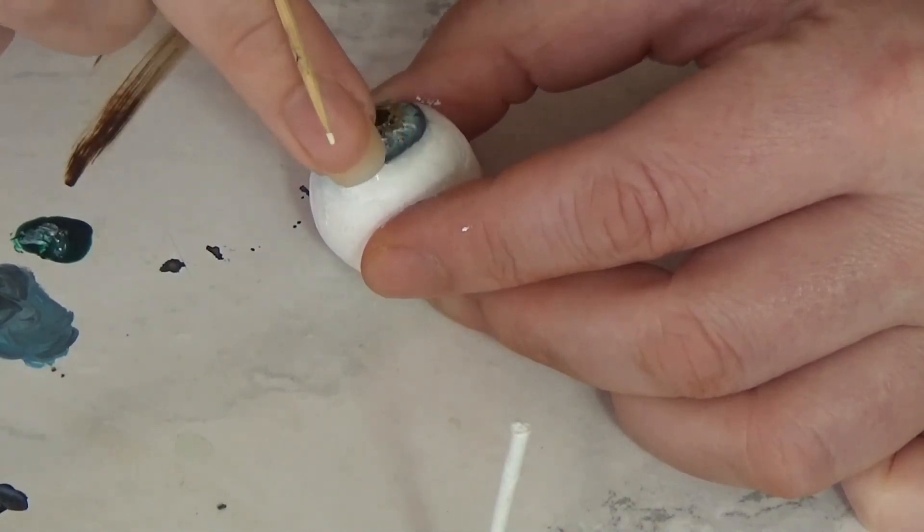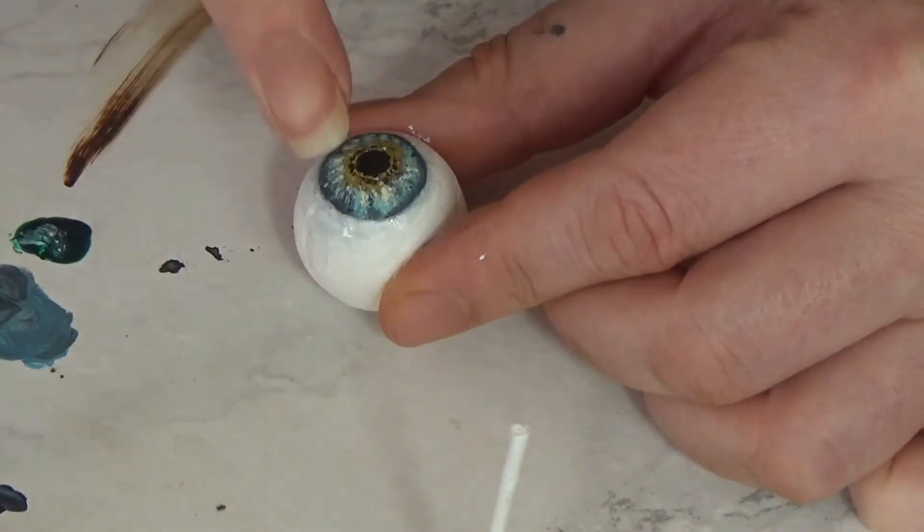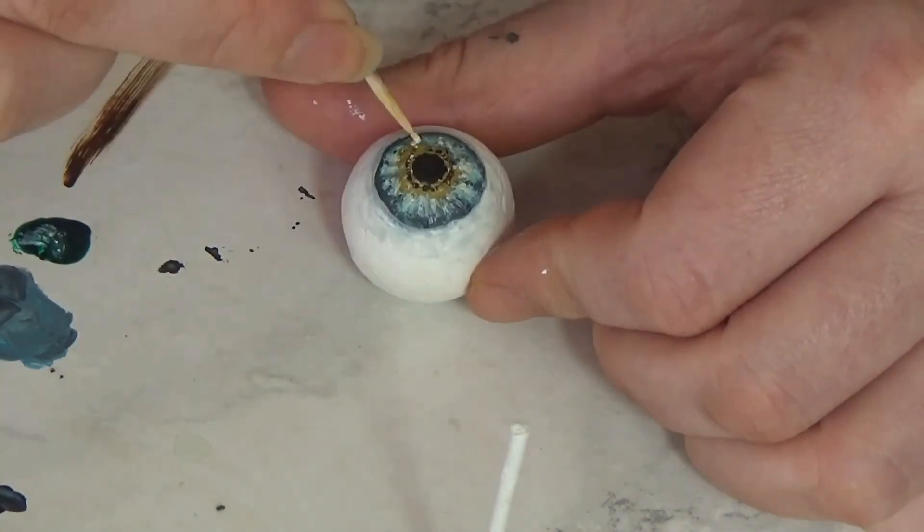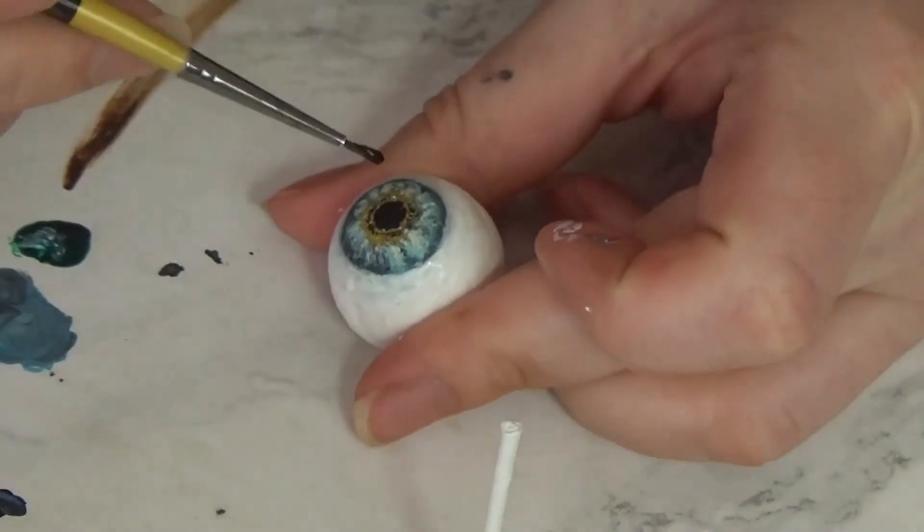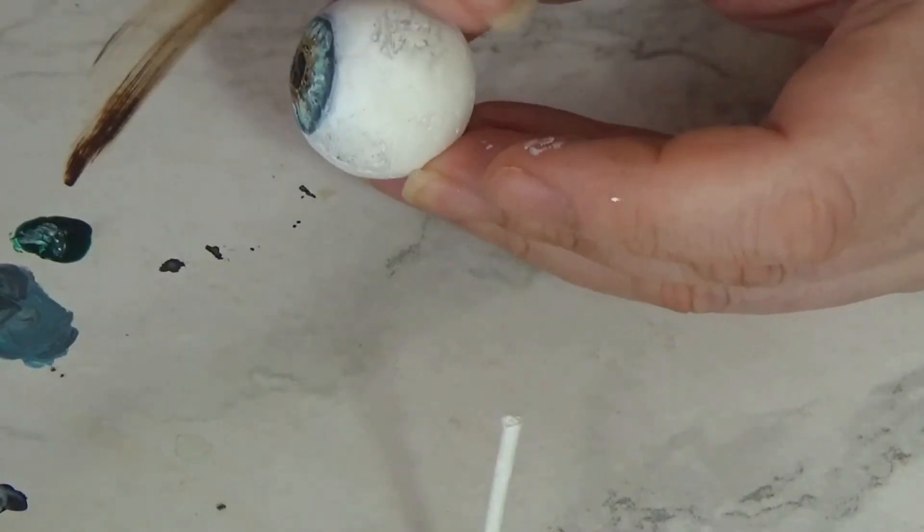Using the same cocktail stick I used earlier, I also added some flecks of white, and then just went back over that pupil just to intensify the black.